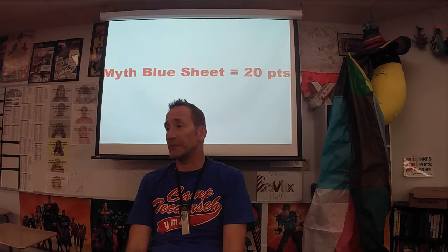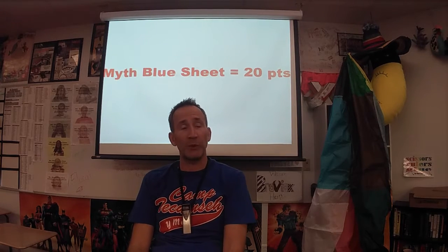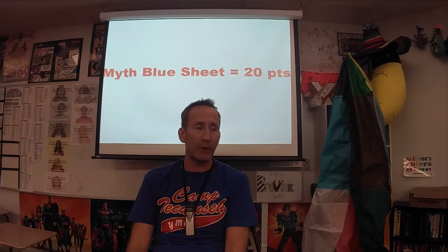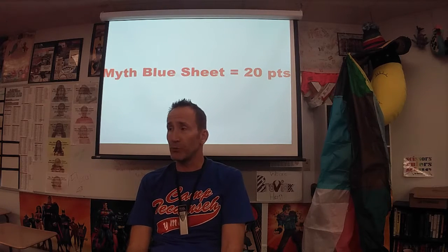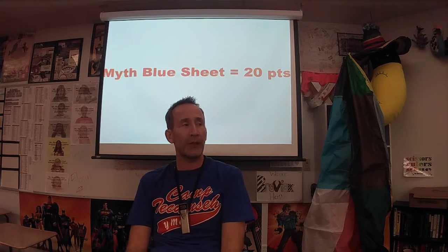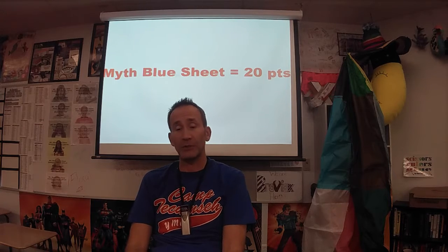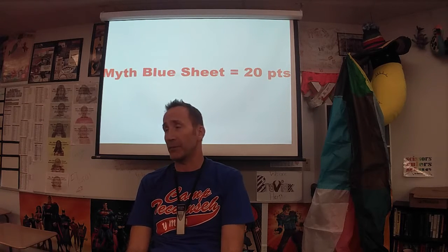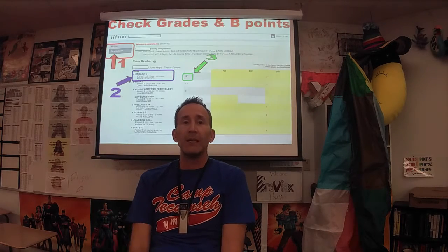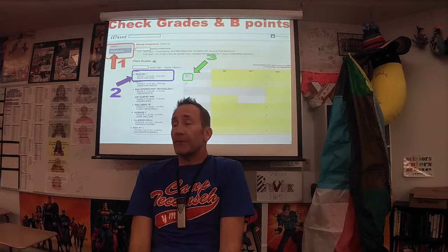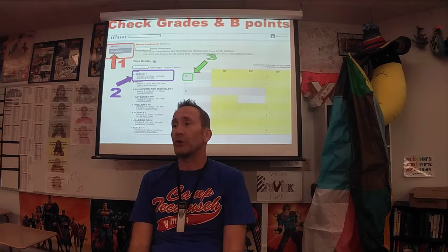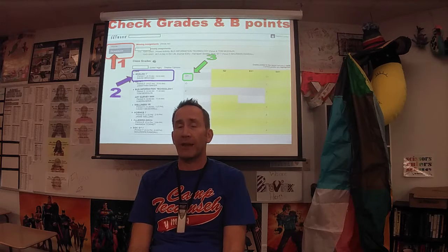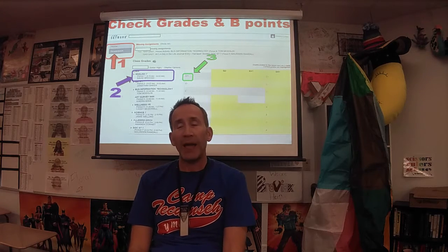The blue myth sheet was worth 20 points. You can see on there if you have a 20, you got all your points. If you got less than 20, then there are things you missed. You should see little purple circles on there that tell you where the things are you didn't do, which most likely is probably not a major surprise to you. If you don't know how to check your B points on Skyward, I am going to show you how to do that now because I keep having kids ask me how to check their B points on Skyward.